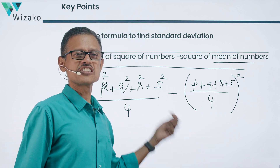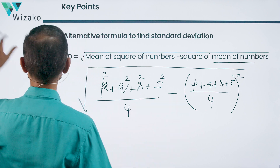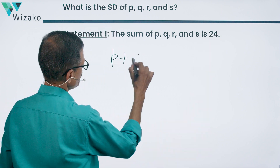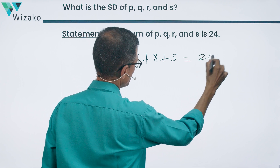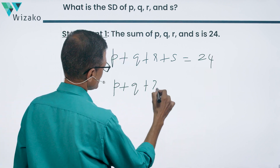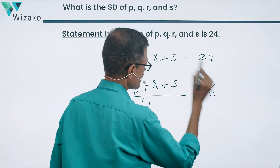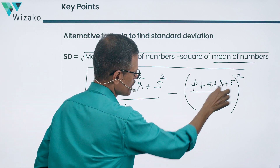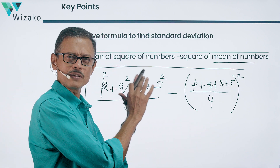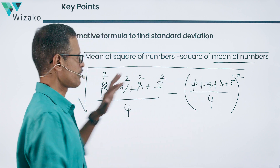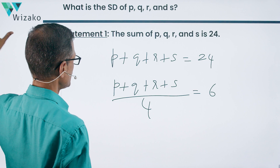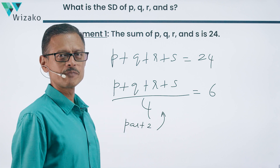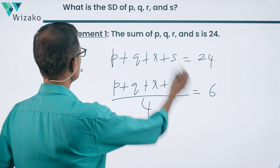Armed with this knowledge, let's take a look at Statement 1. Statement 1 tells us that the sum of P, Q, R, and S is 24 — so P + Q + R + S = 24, and divided by four that gives us a mean of six. This gives us part two of the formula. But we don't have part one, so we can't proceed. Statement 1 alone is not sufficient — rule out answer options A and D.